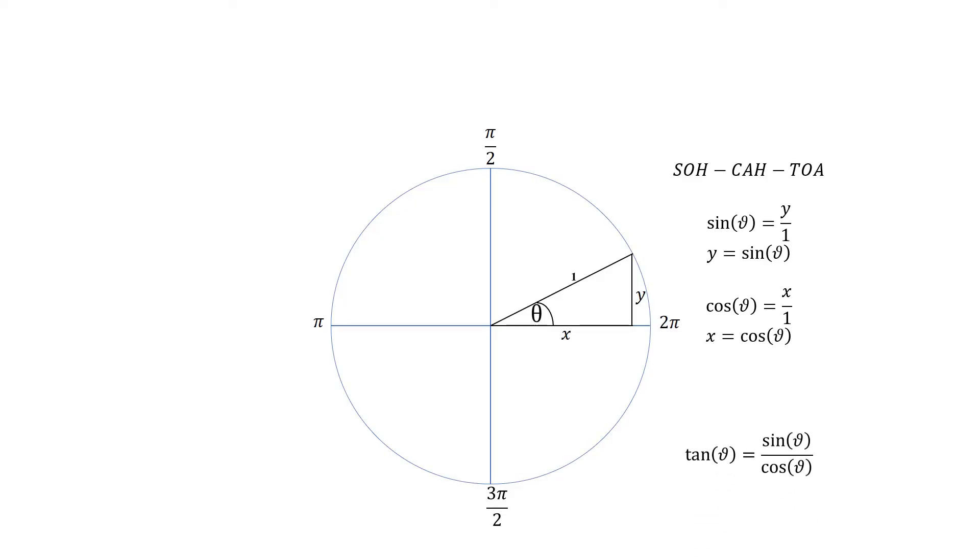Now to find tan, tan is equal to sine on cos, as we all should remember. And so basically tan theta is going to be y on x, so basically the gradient of that angle.